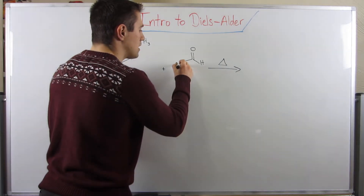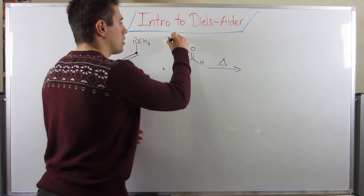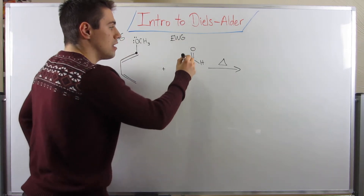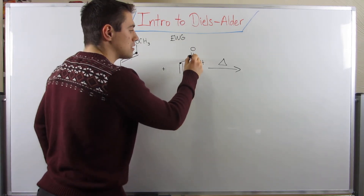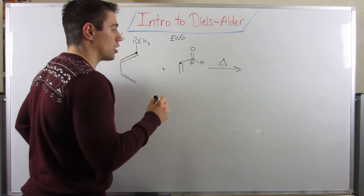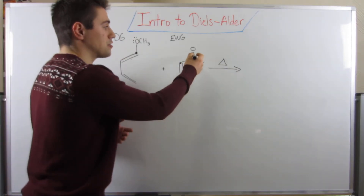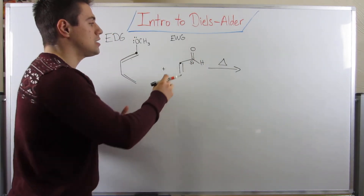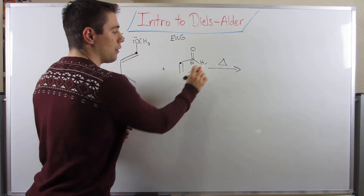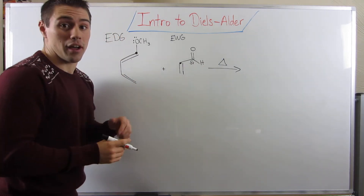On the other hand, if you look at a dienophile, where we put electron-withdrawing groups to activate them and make them more reactive, the carbon directly off of the system is going to have a partial positive charge. It's going to try and suck electron density out of the system - the system being our dienophile.